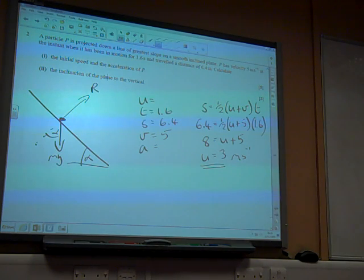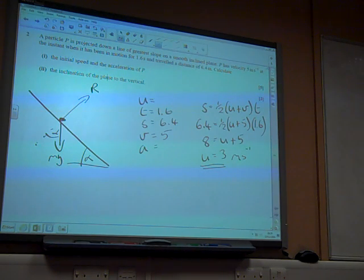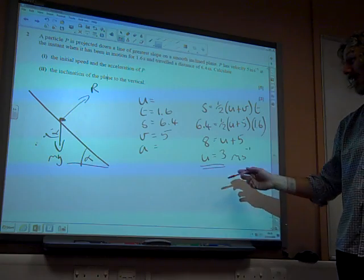Having found U... I actually did this the other way. I did S equals VT minus half AT squared to find A first, and then I used V equals U plus AT. At this point, all we need is to find A.